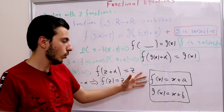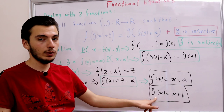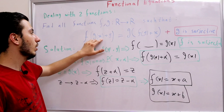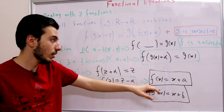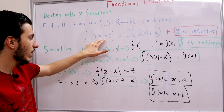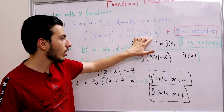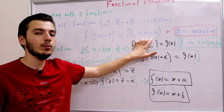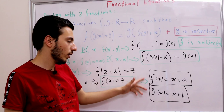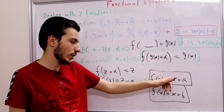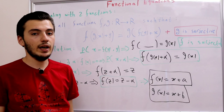Let's verify the solution. Substituting f(x) = x + a and g(x) = x + b into the original equation: the left-hand side gives (x + y) + a + b, and the right-hand side also gives (x + y) + a + b. Both sides are equal, so the solution checks out.